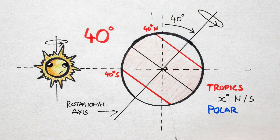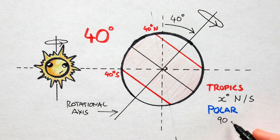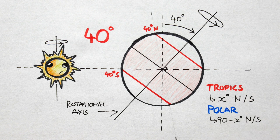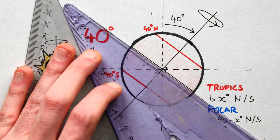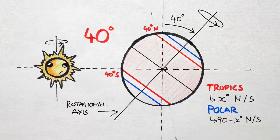To find the planet's polar circles, simply take the complement of your axial tilt, i.e. 90 degrees minus the axial tilt. So in this case, 90 minus 40 is 50 degrees. So 50 degrees north is one polar circle and 50 degrees south is another polar circle, here and here.